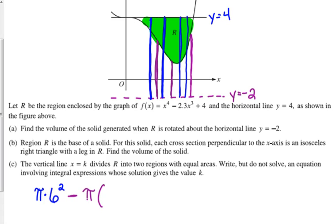It's pi times the radius, but we don't know what the radius is. We've got to figure that out. So we know that this distance right here from the x-axis to the curve is whatever the y value is, right? That's y.